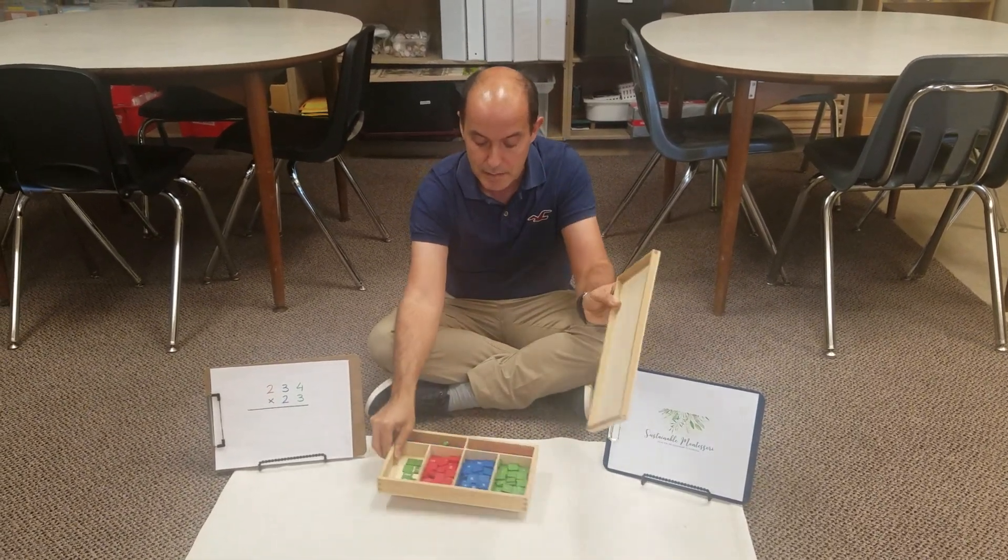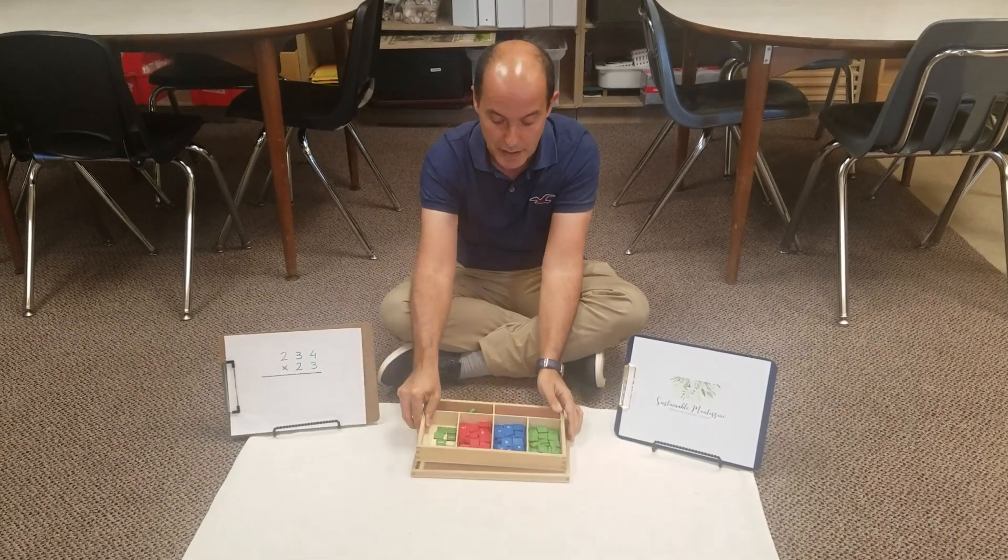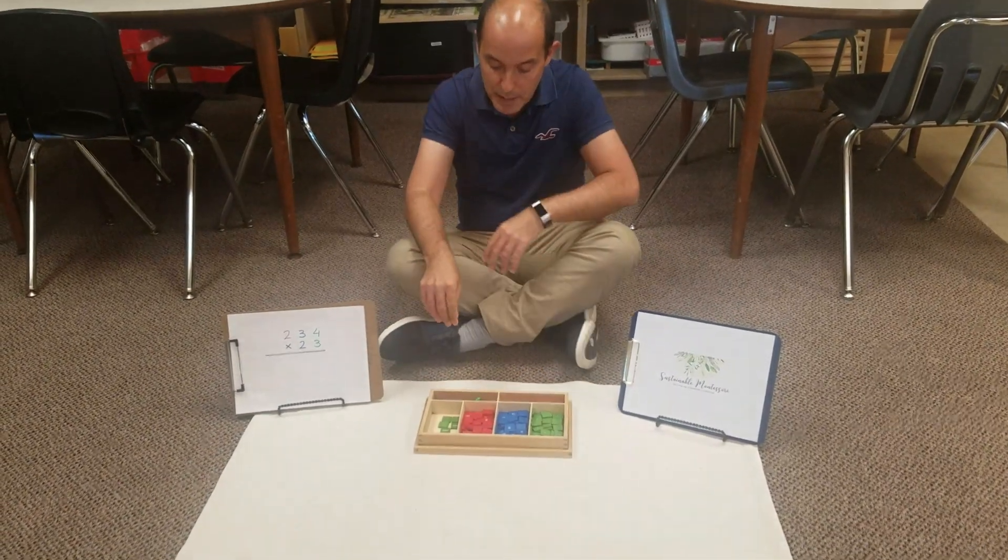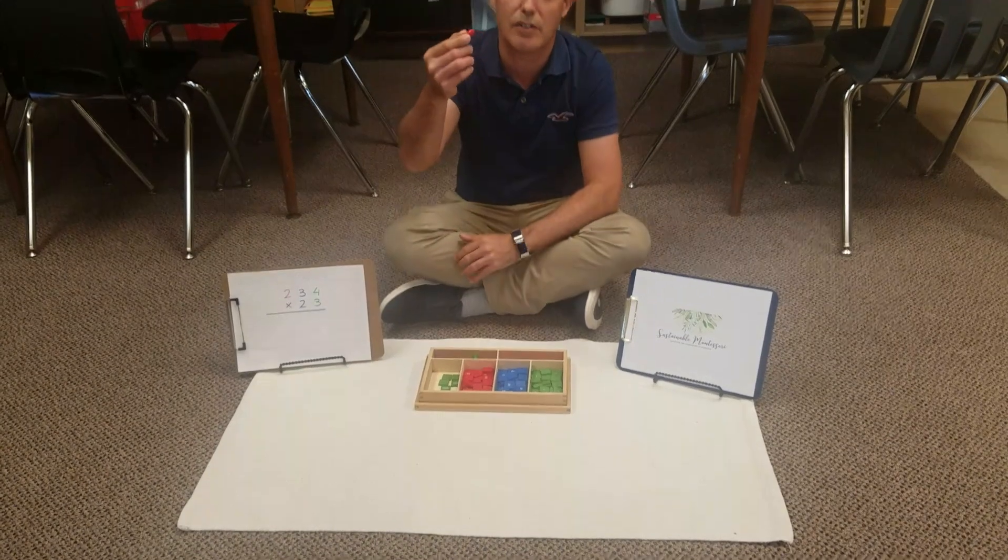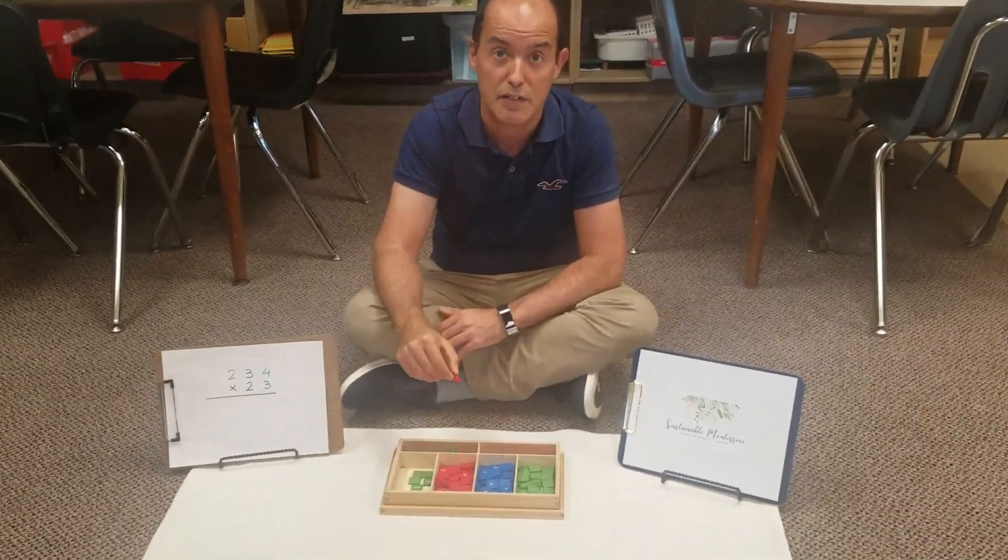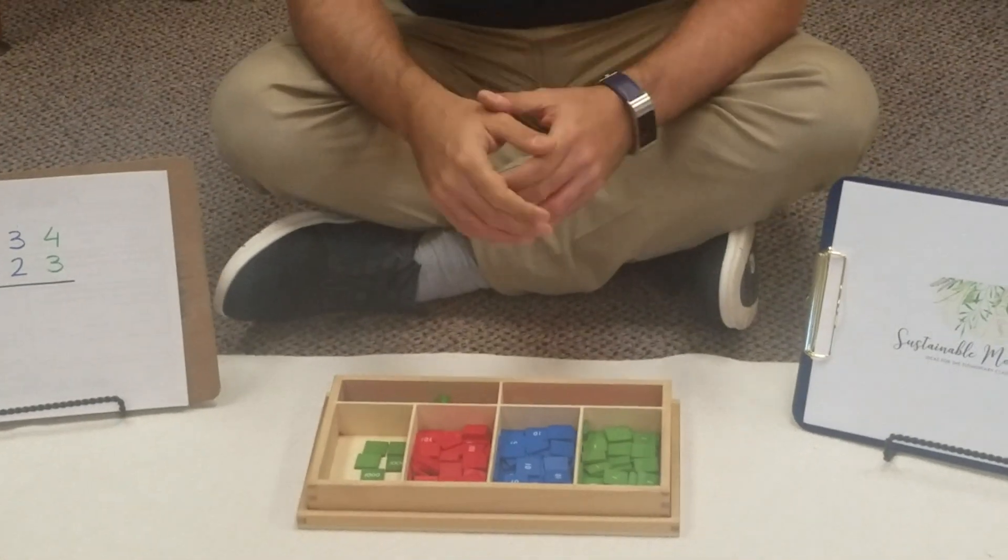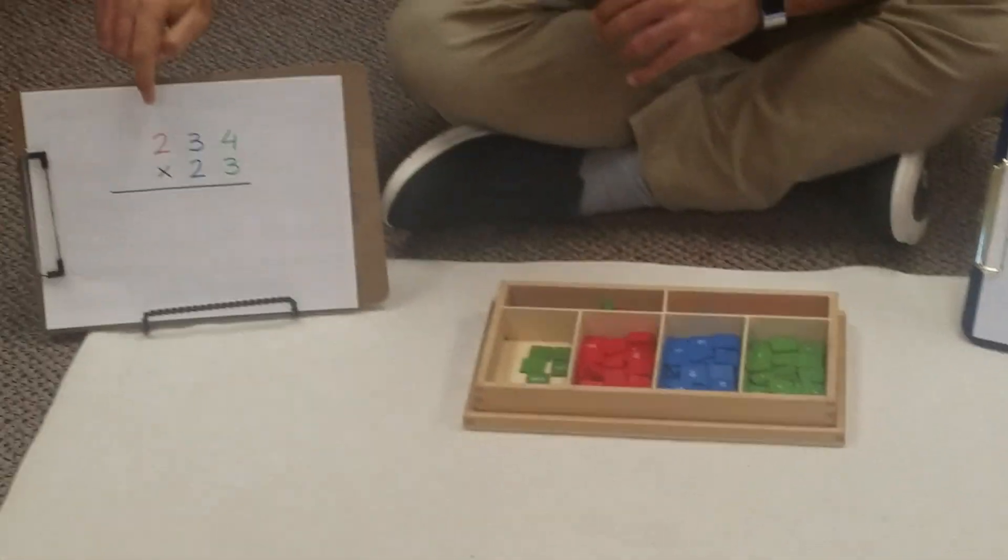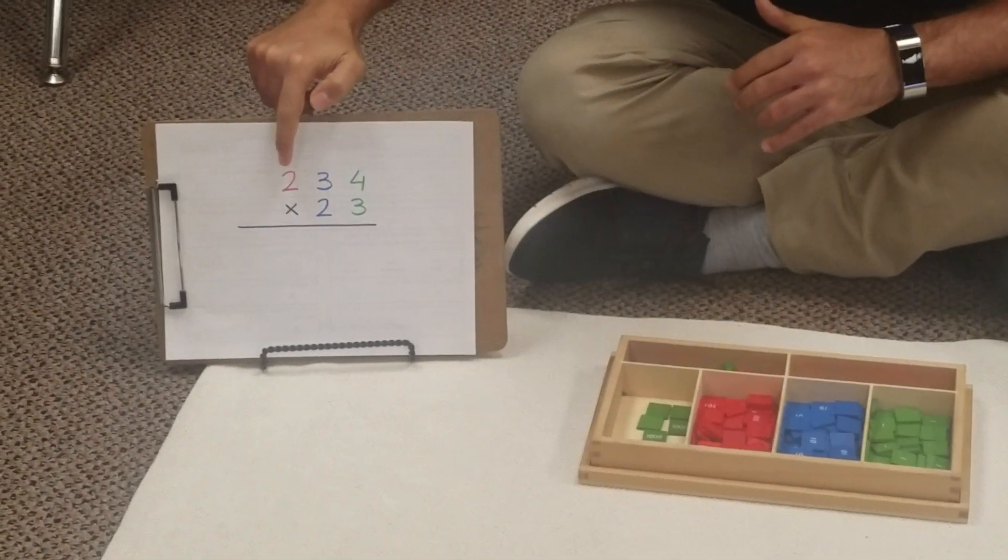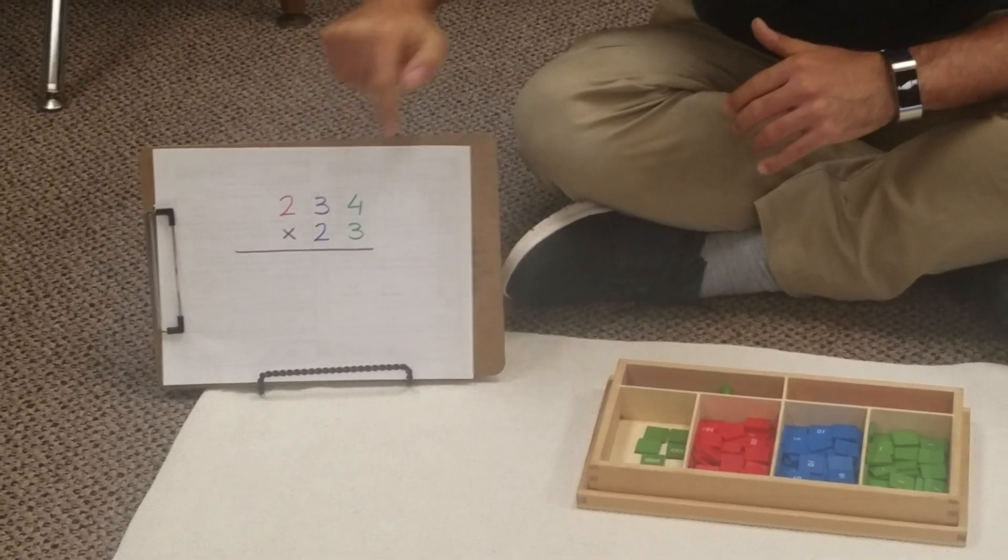And today we're going to present them a lesson on how to do double digit multiplication. This is very fun because they get to use the skills with the different colors that they've been asking us for a long time. When can we use this one? Now is the moment that they can use it. So we have here our operation and we have 234 taken 23 times.